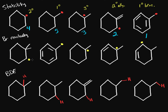Now that we've identified the most stable radicals on each molecule, we compare them: a secondary, a primary benzylic, a tertiary, a tertiary allylic, and a secondary allylic. The benzylic is most stable due to benzene's multiple resonance forms, so it's ranked first. Of the two allylic radicals, tertiary allylic is more substituted, so it's second, secondary allylic is third. Then tertiary is fourth, and secondary is fifth.